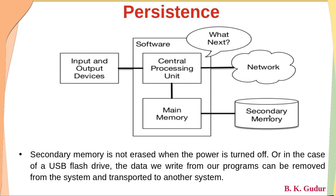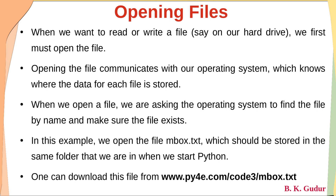Secondary memory is not erased when power is turned off. In the case of a USB flash drive, the data we write from our programs can be removed from the system and transported to another system. Data stored in secondary memory is available even after power failure. Basically, a file is a group of characters — a text file is a group of characters, whereas image, audio, or video files are groups of binary digits.